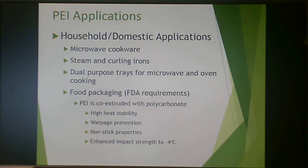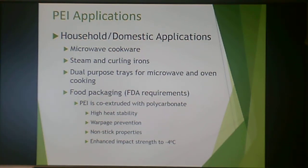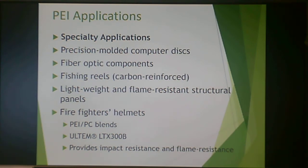Polyetherimide has been used to make microwave cookware. It's also used in steam and curling irons and dual-purpose trays for microwave and oven cooking. It meets FDA requirements when co-extruded with polycarbonate for high heat stability, warpage prevention, nonstick properties, and enhanced impact strength at negative 4°C — typically the temperature of your freezer. Specialty applications include precision molded computer disks, fiber optic components, carbon-reinforced fishing reels, and lightweight flame-resistant structural panels. Firefighters' helmets are made from an Ultem LTX-300B polyetherimide-polycarbonate blend, providing both impact resistance and flame resistance.